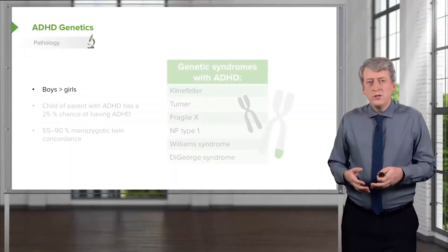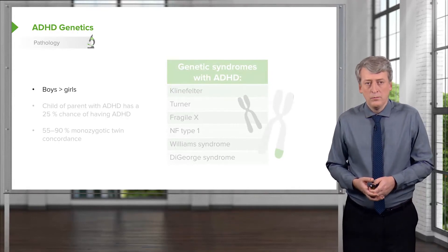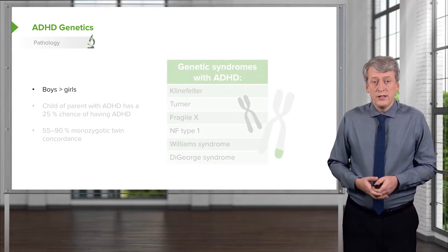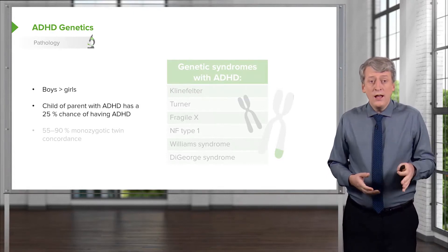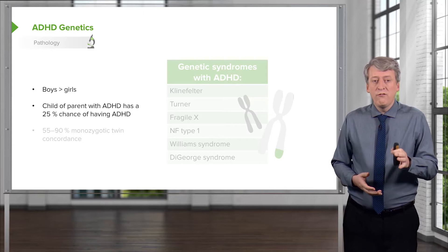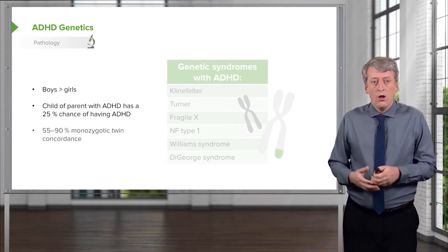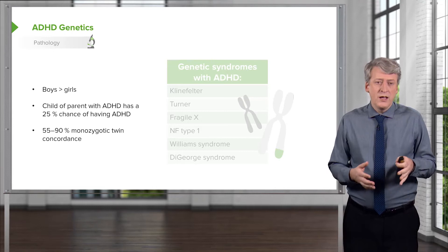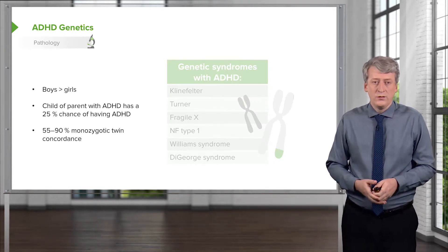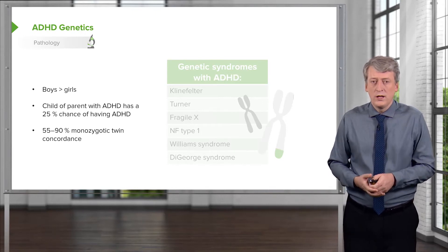There seems to be a genetic predisposition to ADHD. Boys are much more likely than girls to develop the problem. A child of a parent with ADHD has a 25% chance of developing ADHD themselves. There is also a 55 to 90% monozygotic twin concordance, indicating strong genetic factors at work.